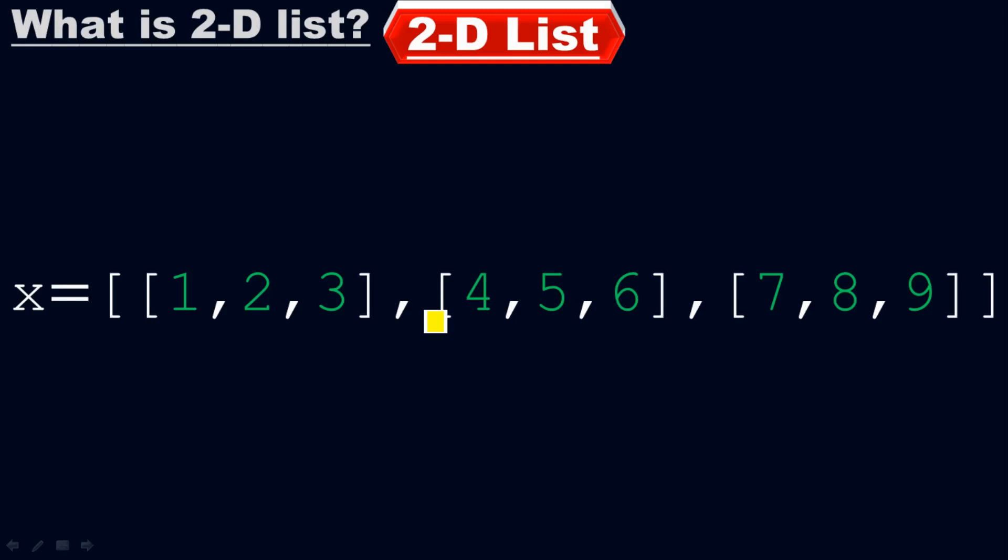Look at here, from here up to here is one list. From here up to here is another list. From here up to here is a third list. But for the main list, it considers each as a single element or a single item.